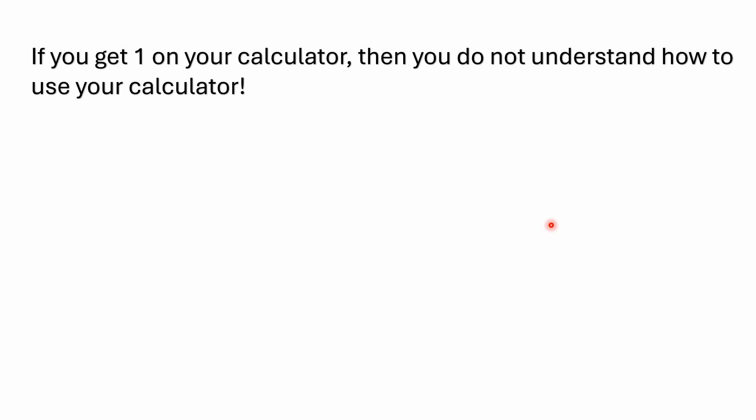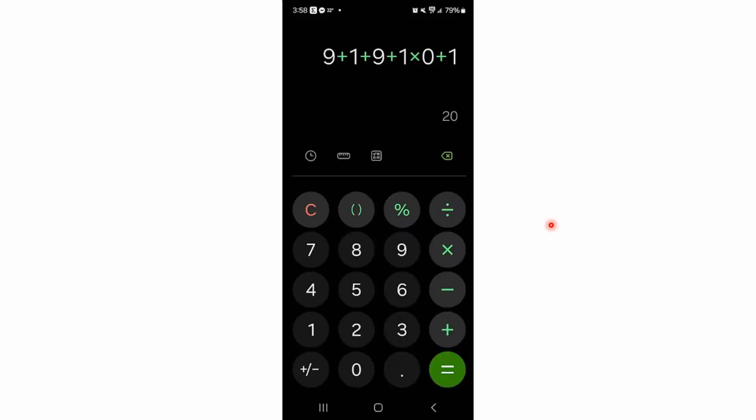So the other thing, too, I want to mention real quick is if you get one on your calculator, then you basically don't understand how to use your calculator. Here's an example from an Android phone. This is a scientific calculator. It will give you the correct answer. Your Android cell phone calculator or your iPhone calculator works in expression mode and will give you the correct answer of 20. I will show you an example here. Like on a Windows computer, you've got the calculator that basically works in standard mode or scientific mode. Standard mode works in immediate execution. Scientific mode works in expression mode. There's two different input methods with calculators. And if you don't understand that, you're going to get the wrong answer of 1. And I'm going to show you that.